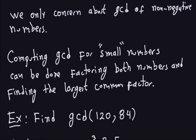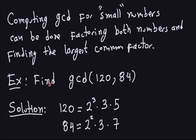Let me write down an example. Let's try to find the greatest common divisor between 120 and 84. What you want to do is take both numbers and find the factorization into prime numbers of both. Here I have 120, which is 2³ times 3 times 5 — this is the canonical factorization of 120. Similarly, 84 is 2² times 3 times 7. Once you have this factorization, one of the properties of the GCD is that it will be the common primes to the smallest exponents.